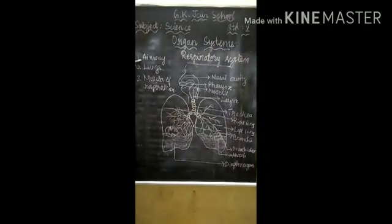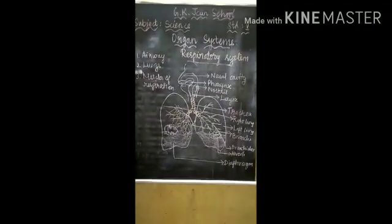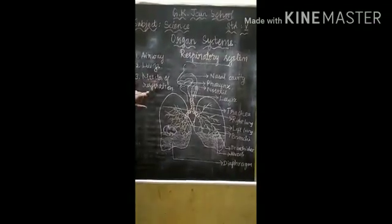There are 3 major parts forming the respiratory system. The first one is the airway, lungs and the muscles of respiration.